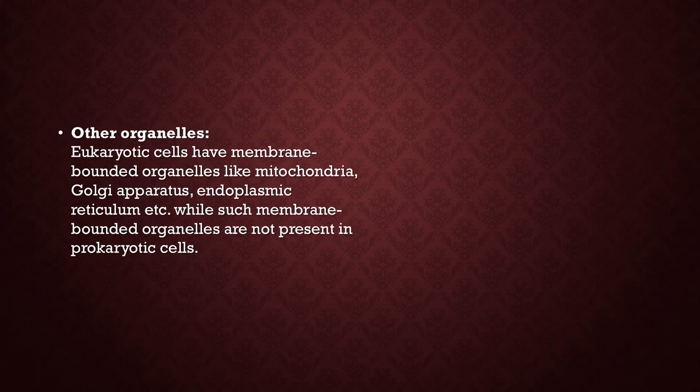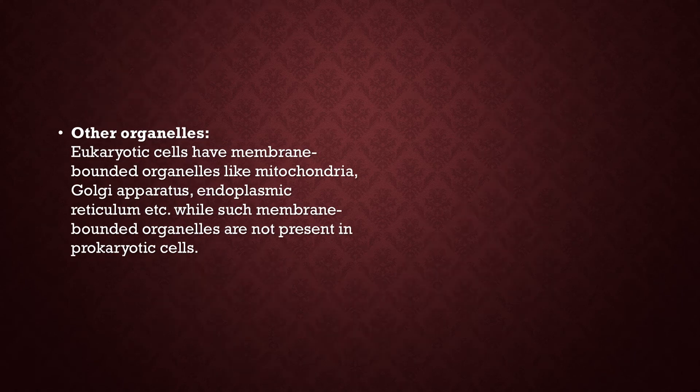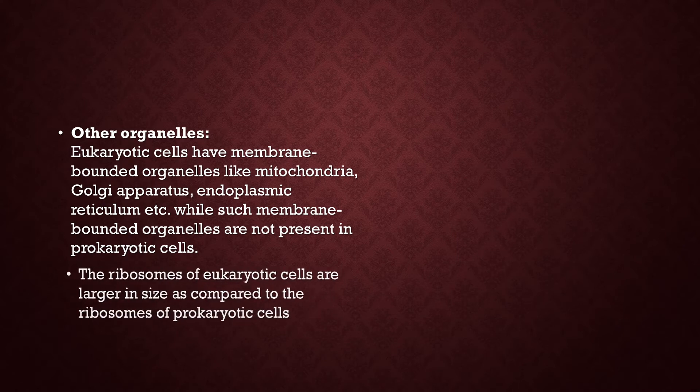The next major difference between prokaryotic and eukaryotic cells is organelles. All organelles of eukaryotic cells are membrane-bounded, such as mitochondria, Golgi apparatus, endoplasmic reticulum, etc. These organelles, which are present in eukaryotic cells, are not present as membrane-bounded organelles in prokaryotic cells.